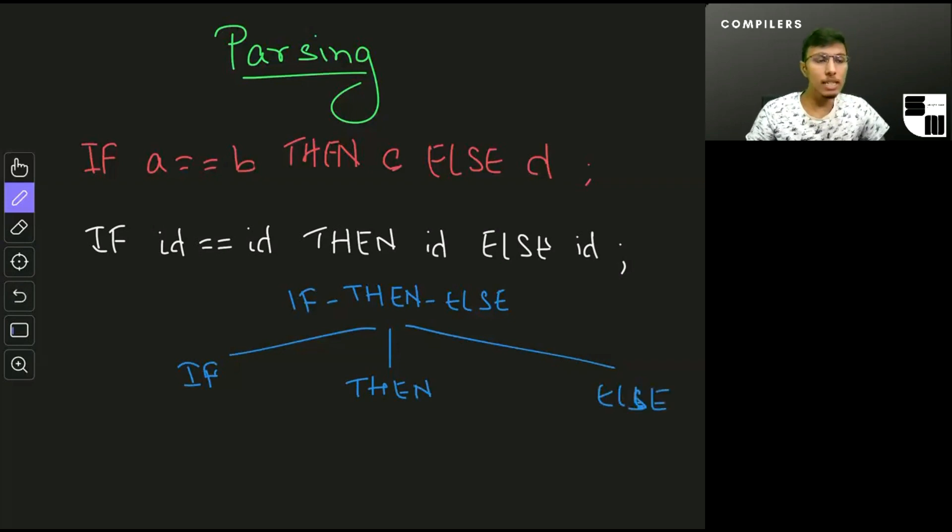Within the IF part as well, we have the equal equals operator which is being used on two identifiers, so we have this here. The THEN part is just an identifier and the ELSE part is just an identifier in this case. So this is the parse tree that it's going to create.